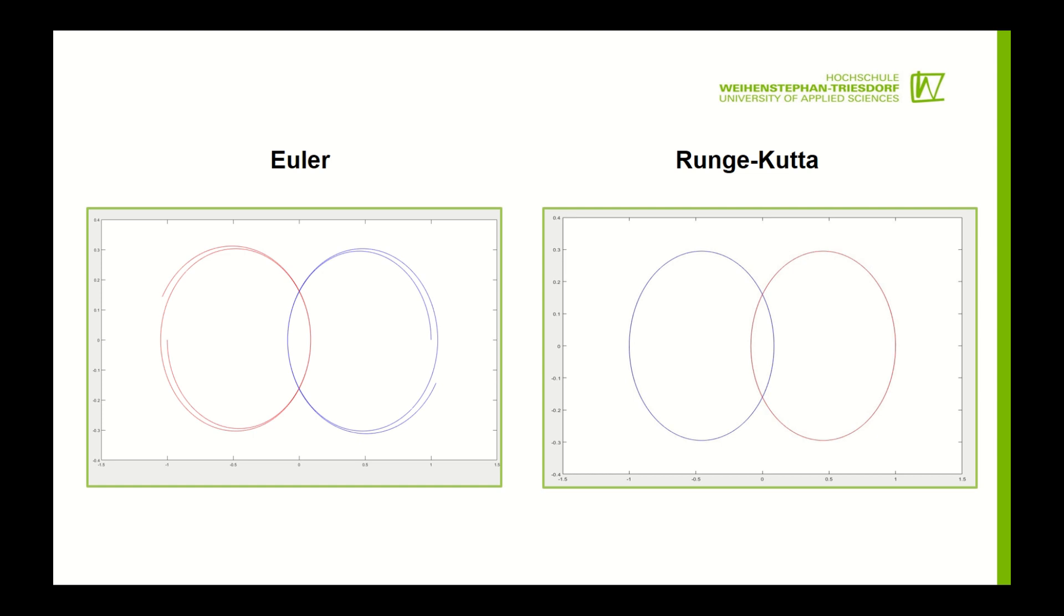Two bodies in two dimensions orbit each other in perfect ellipses. As you can see the result simulation with Euler's method shows an outward spiraling behavior. But when using the Runge-Kutta algorithm we receive the expected orbits.